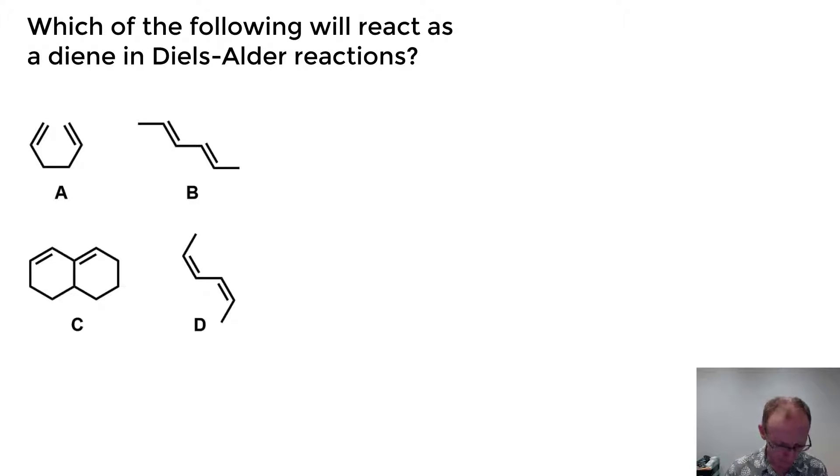So if we look at A, that isn't actually a conjugated diene. Each of the pi systems is actually separate from one another and they're separated by that two carbon unit. So that cannot undergo a Diels-Alder reaction because it is not a conjugated diene.